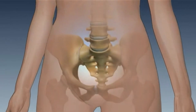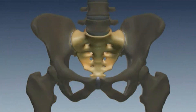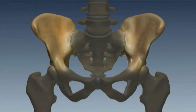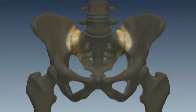The SI joint, or sacroiliac joint, is the bony surface where the sacrum joins the iliac wings. It's not quite the spine, not quite the hip — just the bones in between where those two areas come together.